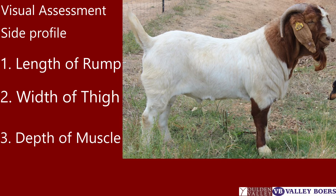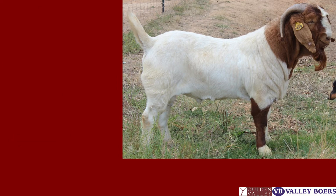So we have looked at the length of rump, width of thigh, and depth of muscle. A side profile can still tell you a lot about the animal's back end muscle.